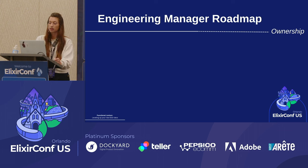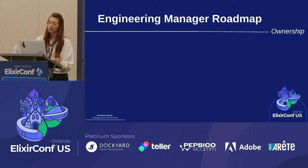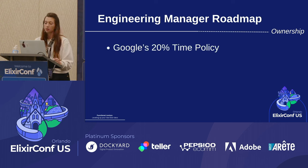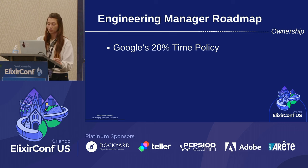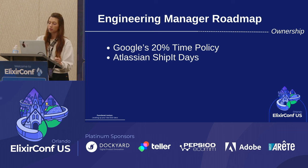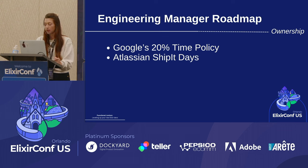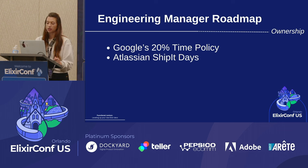Next up is ownership. Research suggests that being given individual responsibility and autonomy can lead to increased performance and motivation — often referred to as the autonomy effect or empowerment effect. This has been supported by studies like Google's 20% time policy, where employees dedicate 20% of their work time to personal projects, which has resulted in several successful products including Gmail. Atlassian has Ship It Days, which allow employees 24 hours to work on any project they choose, leading to new features and fostering a culture of innovation. This can also take form in assigned projects — my company had me build a full-stack web app and deploy it.